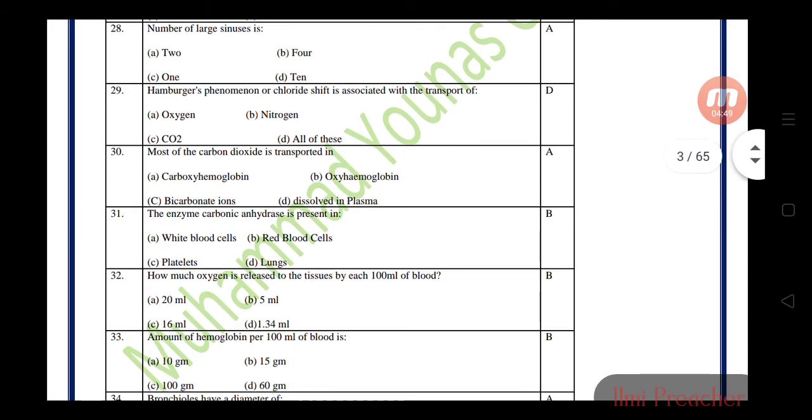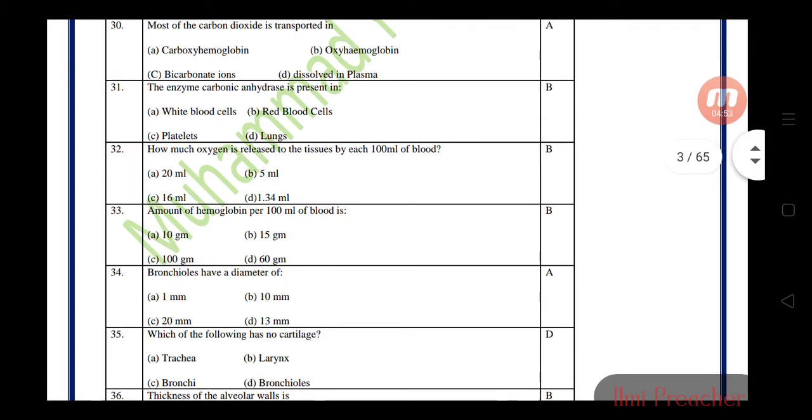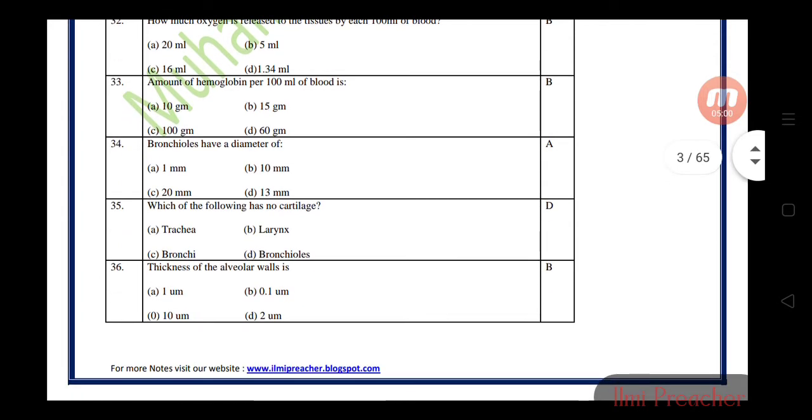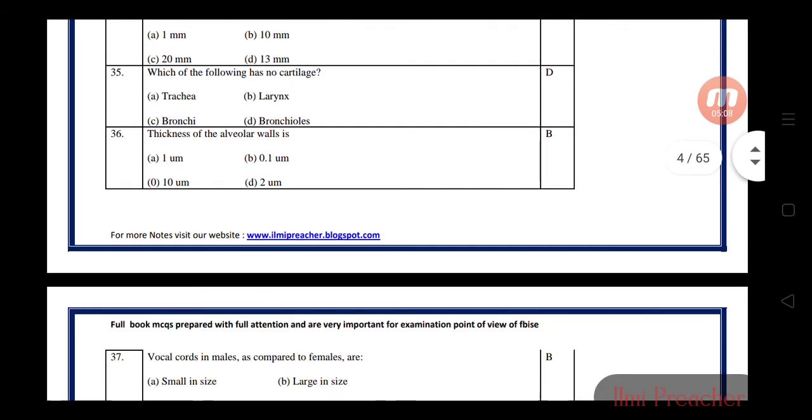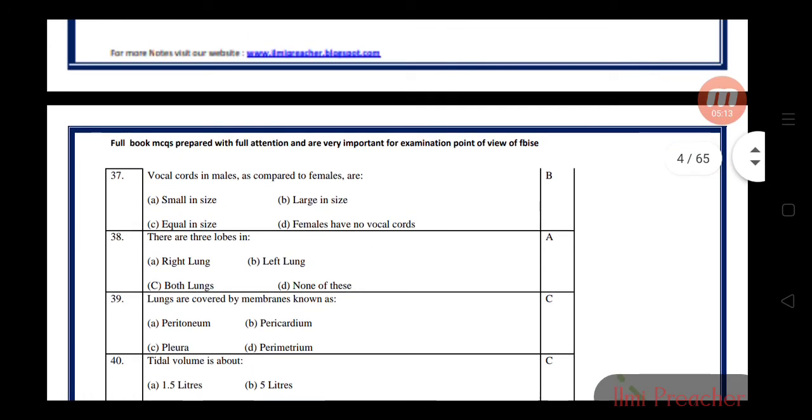The enzyme carbonic anhydrase is present in red blood cells. How much oxygen is released to the tissue by each 100 ml of blood? That is 5 ml. Amount of hemoglobin per 100 ml of blood is 15 grams. Bronchioles have a diameter of 1 mm and have no cartilage. Thickness of alveolar walls is 0.1 micrometers.